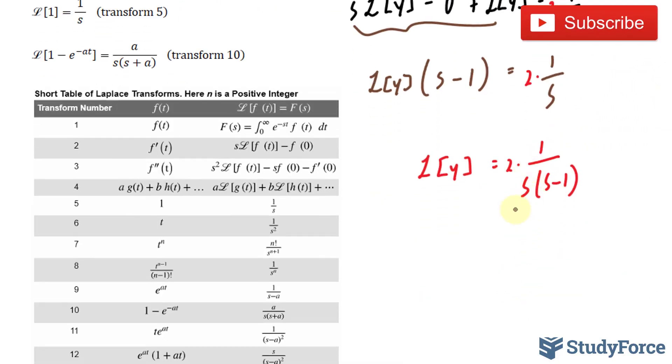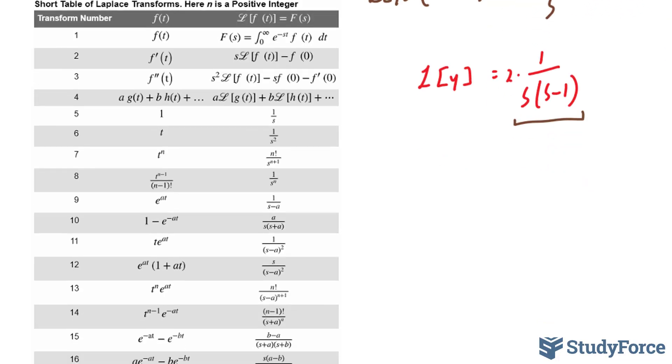You'll notice that this expression can be matched up with transform 10. Take a look where a is equal to 1, and as a result, we can switch this with 1 minus e to the power of negative a t, where a is equal to 1.